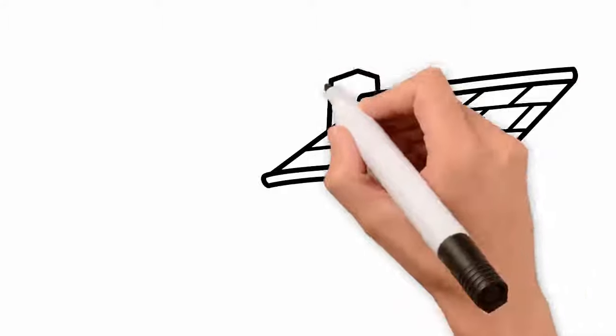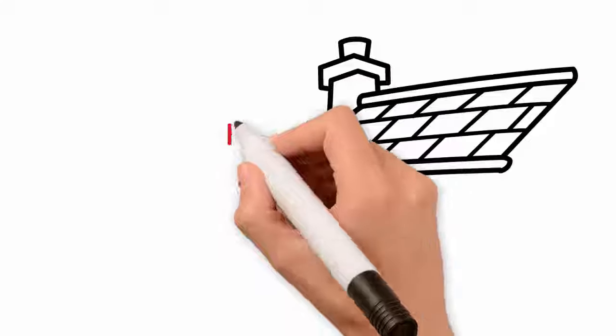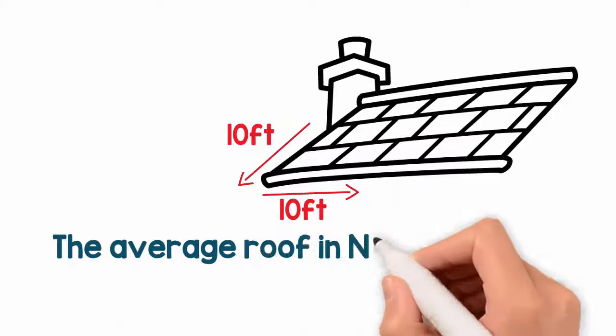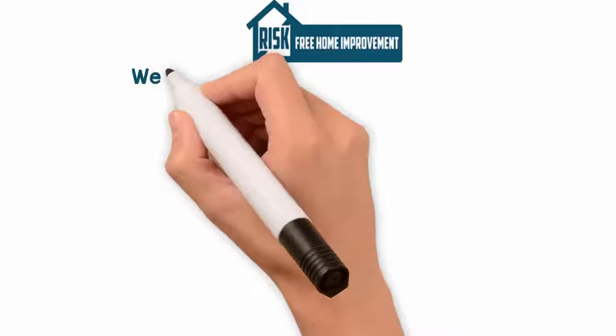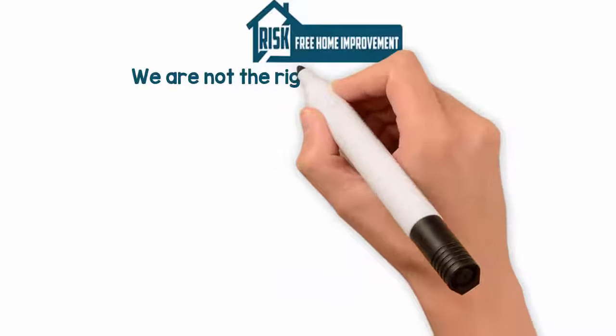Roofing is normally priced by the square, which is a 10 foot by 10 foot section. The average roof in New England is 20 square or 2,000 square feet. Now, before we get to our pricing, I would like to take a moment to discuss the fact that we are not the right contractor for everyone.